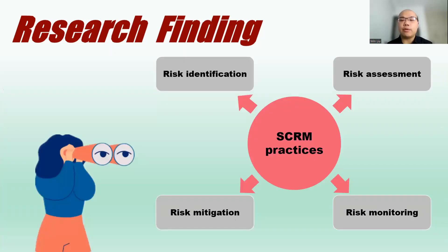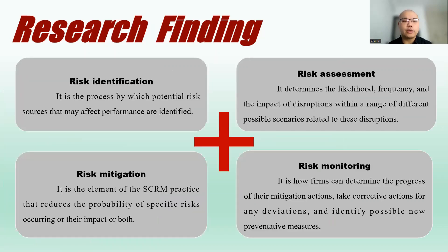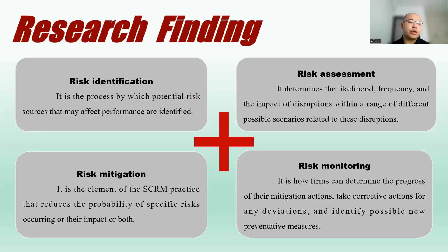The volume of supply chain risk management practices can be defined in terms of risk identification, risk assessment, risk mitigation, and risk monitoring. Risk identification is the process by which potential risk sources that may affect performance are identified. Risk assessment determines the likelihood, frequency, and impact of disruptions within a range of different possible scenarios. Mitigation practices are elements of risk management that reduce the probability of specific risks occurring and their impacts. Monitoring practices involve how organizations determine the progress of their mitigation actions, take reactive actions for any deviations, and identify possible new preventative measures.